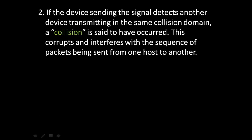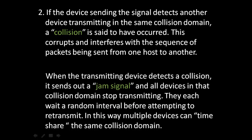Second, if the device sending the signal detects another device transmitting in the same collision domain, a collision is said to have occurred. This corrupts and interferes with the sequence of packets. When the transmitting device detects a collision, it sends out a jam signal and all devices in that collision domain stop transmitting. They each wait a random interval before attempting to retransmit. In this way, multiple devices can timeshare the same collision domain.